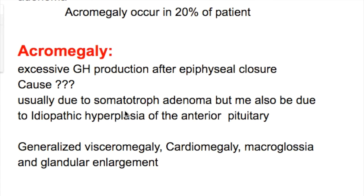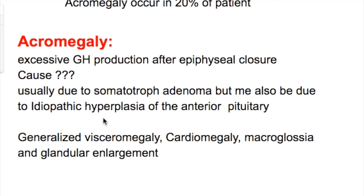Acromegaly occurs due to excessive growth hormone production after epiphysial closure. What are the causes of acromegaly? It is usually due to a somatotroph adenoma in the pituitary, but may also be due to idiopathic hyperplasia of the anterior pituitary. It may also be due to ectopic production of growth hormone.